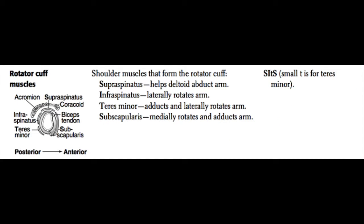Next, we move on to the rotator cuff muscles. These are the shoulder muscles responsible for moving your shoulder in all directions of rotation. They are remembered by the mnemonic SITS: supraspinatus, infraspinatus, teres minor, and subscapularis. Supraspinatus serves to abduct the arm, but only for the first 10 to 15 degrees or so. After that, the deltoid muscle takes over — those first few degrees of abduction are caused by contraction of the supraspinatus.